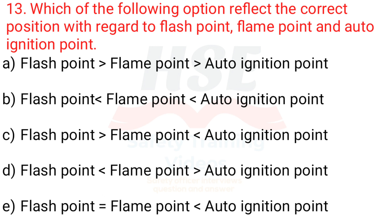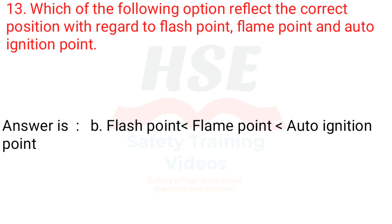Question 13: Which of the following options reflects the correct position with regard to flash point, flame point and auto-ignition point? A through E list various orderings of the three temperatures. The answer is B: Flash point is less than flame point, which is less than auto-ignition point.